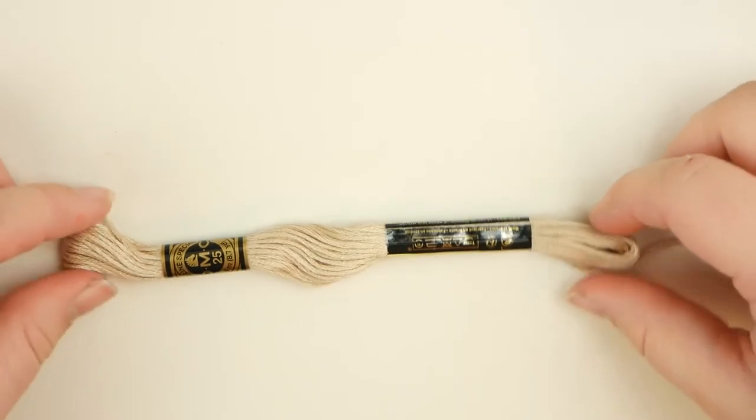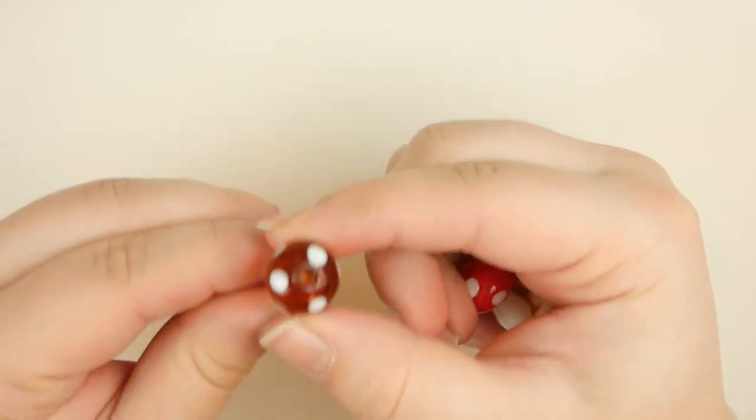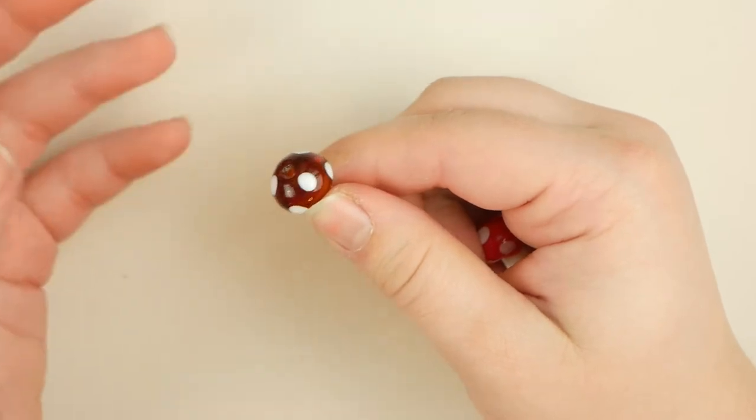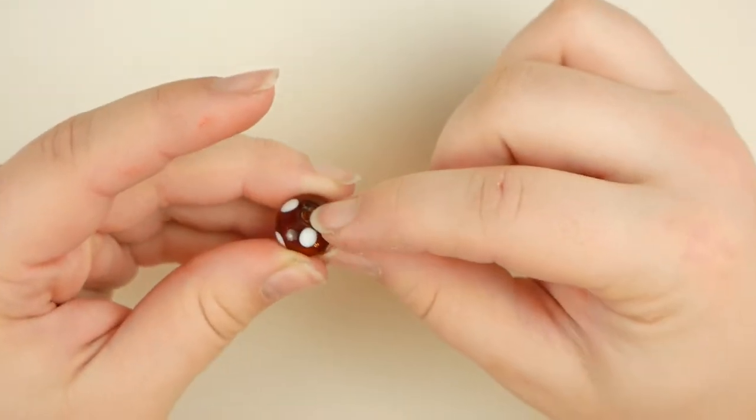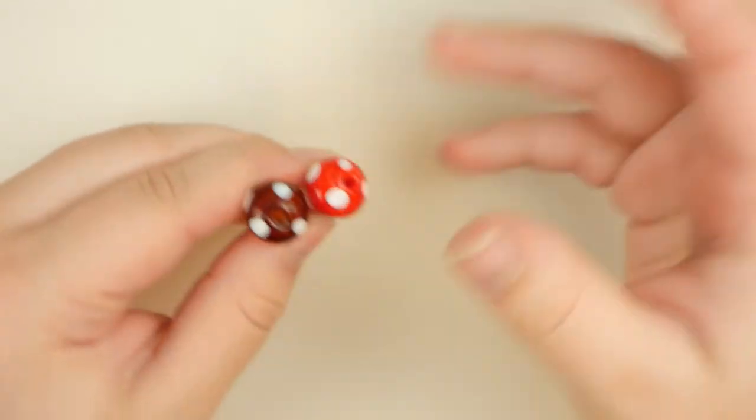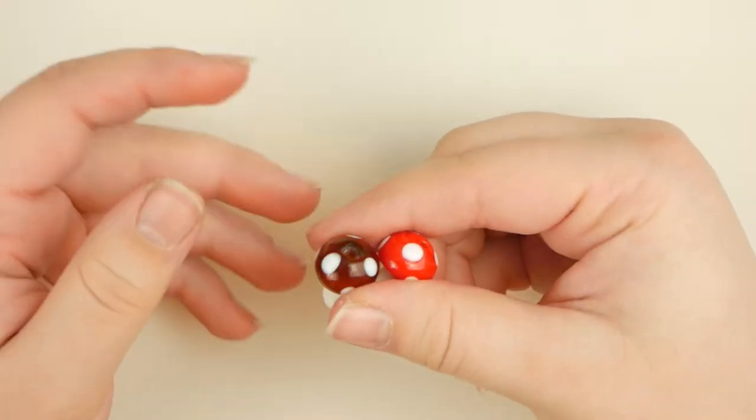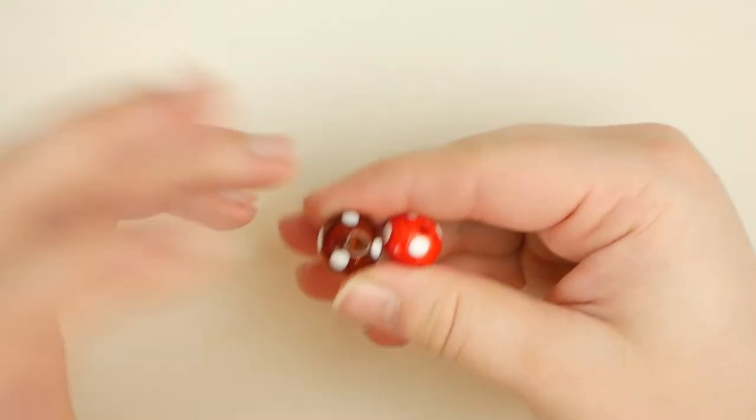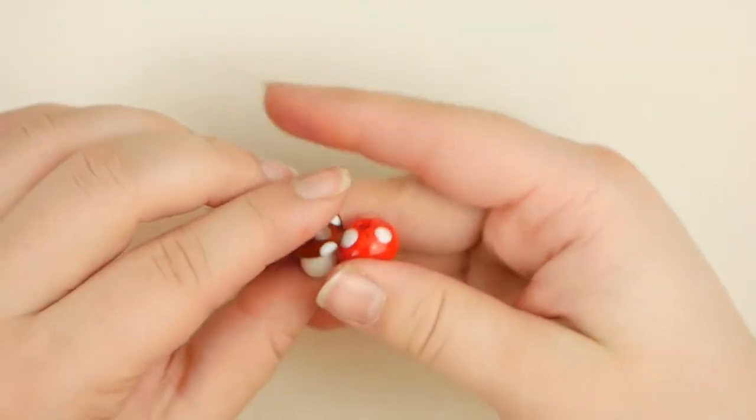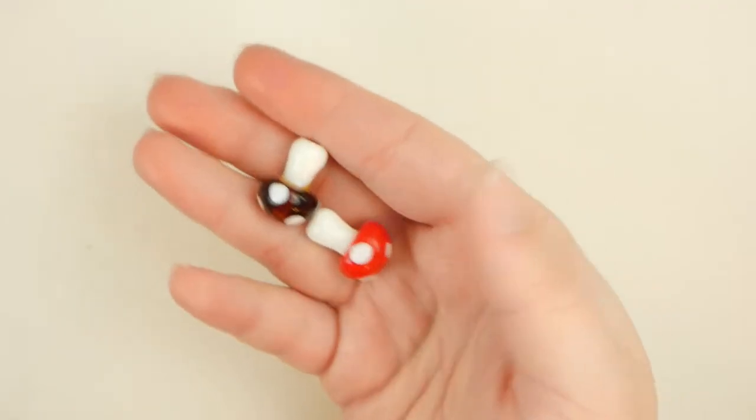So first you'll need embroidery floss. Next you will need mushroom beads. And with these you need to make sure that they actually have a pretty decent size hole that goes all the way through them so that it'll fit on the thread. Some of them it'll be like a big hole on top, tiny hole on the bottom, or vice versa. So if you're buying beads specifically for this project make sure you look out for that. Luckily I've bought all my beads online and I get them in big like 200 bulk packs so there's gonna be some that will work well for this project but there's also a lot that don't. So be very mindful of that while picking out beads.